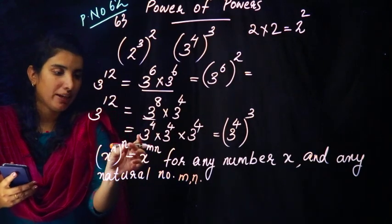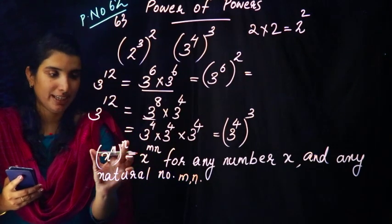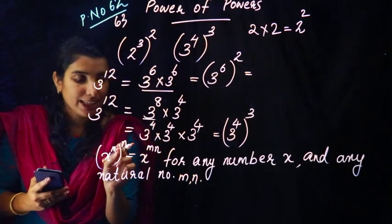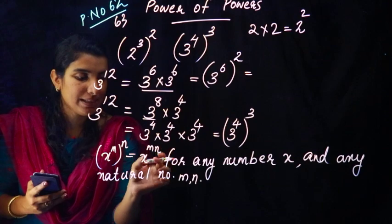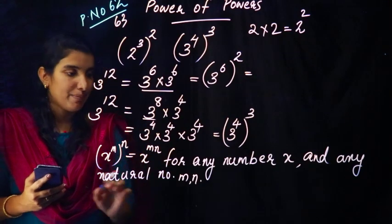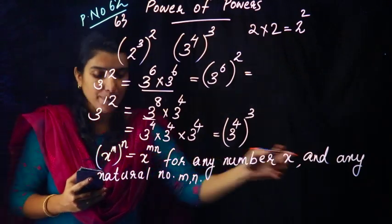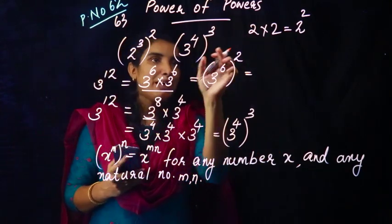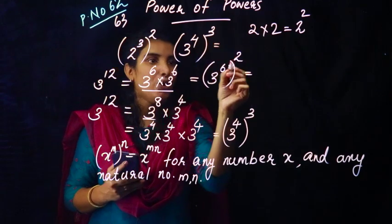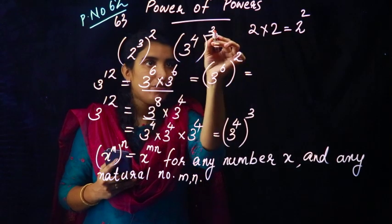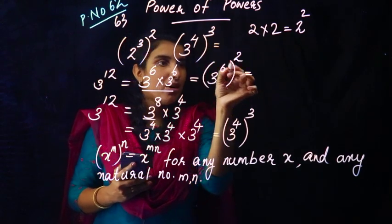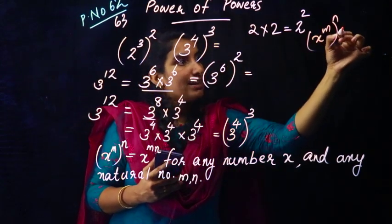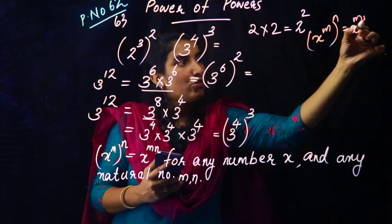Now if we have 1 raised to 4, the all raised to n, we have to write the value — we multiply m and n. The all raised to n: for any number h, m is a natural number. We write x raised to m, the all raised to n, which equals x raised to m×n.